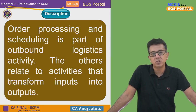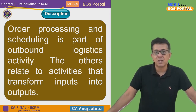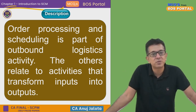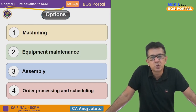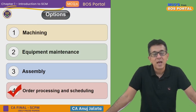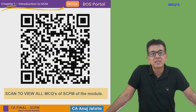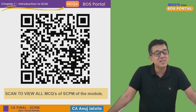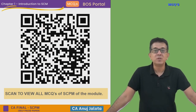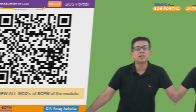Out of the four options, the first, second, and third are obviously part of core operations — core manufacturing. But the last one is not part of manufacturing; goods are already manufactured. Order processing and scheduling is part of outbound logistics, which is the third primary activity. The correct answer is the fourth option. For your reference, here is the QR code for all the MCQs of CA Final from the module — scan to view them. Thank you, take care, see you next time!